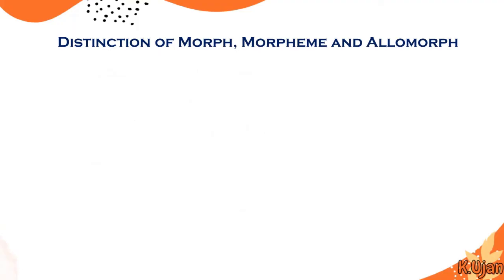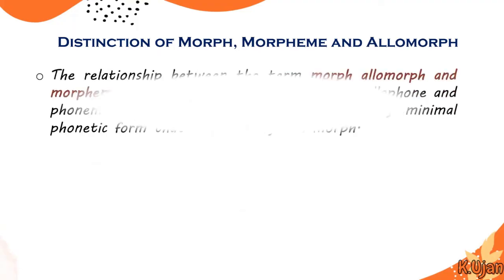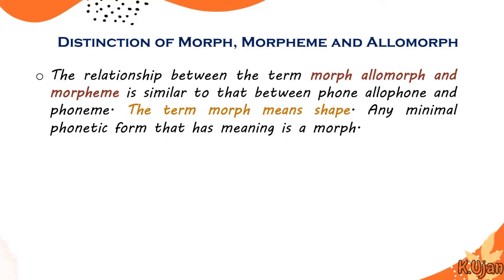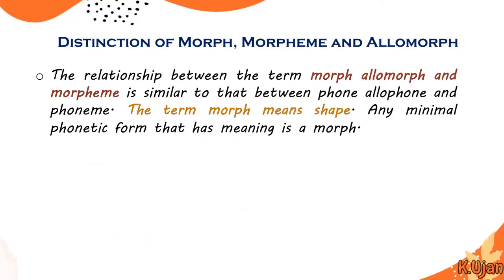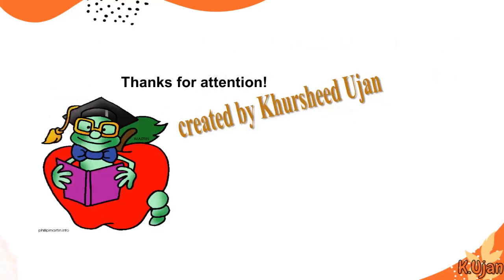The relationship between morph, allomorph, and morpheme is similar to the relationship between phon, allophone, and phoneme. Students who are confused may follow the link in the description for the differences between phon, allophone, and phoneme — the same logic applies here. Any minimal phonetic form that has meaning is a morph. This is the full distinction of morph, allomorph, and morpheme. Thanks for your attention.